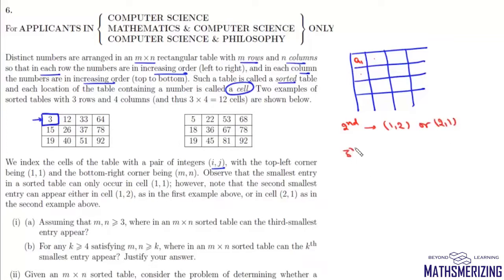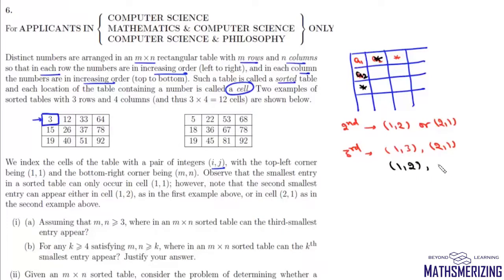For the third smallest element: if the second smallest is in cell (1,2), then we can place the third element either in cell (1,3) or cell (2,1). And if a2 is in cell (2,1), then the third element can be in cell (1,2) or cell (3,1). So the third smallest element can be in any one of these cells: (1,3), (3,1), (1,2), or (2,1). That is the answer to part 1a.